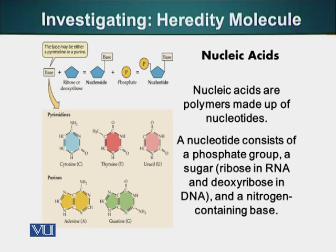Let me again show you the structure of DNA. DNA is made up of a pentose sugar. To that pentose sugar, a base is attached at carbon number 1, and we have a phosphate group attached to carbon number 5. There are 4 bases present in DNA: cytosine, thymine, adenine, and guanine. In RNA, instead of thymine we have uracil. DNA is a polymer made up of nucleotides — this is basically what people came to know about the chemical nature of the monomer of DNA.